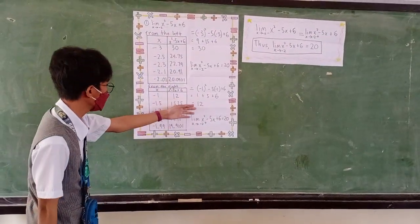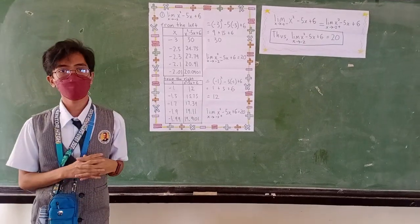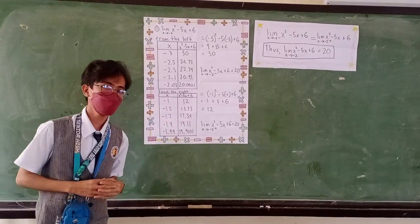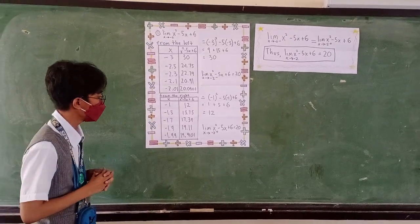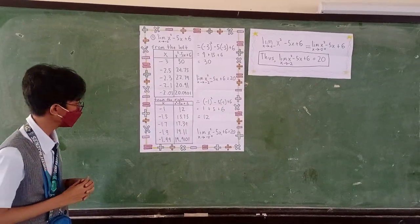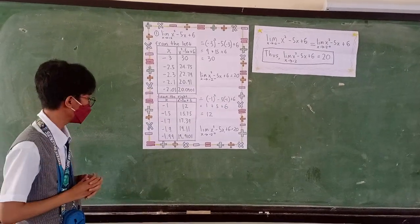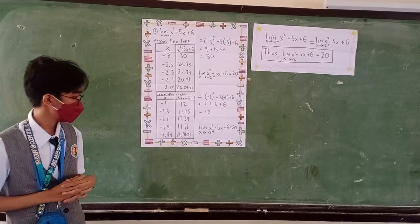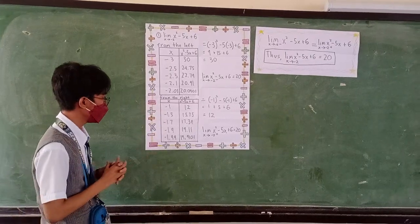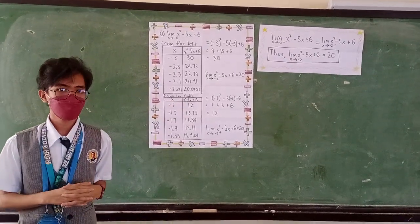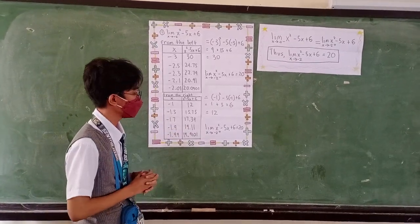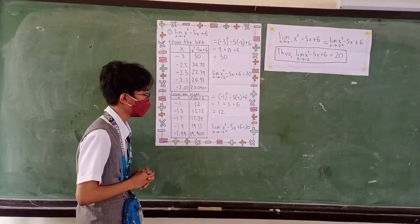We also need to substitute the other values of x. So if x is negative 1.5, the answer would be 15.75. If x is negative 1.7, the answer would be 17.39. If x is negative 1.9, the answer would be 19.11. If x is negative 1.99, the answer would be 19.9101. Same as from the left side, we can see that as x approaches negative 2, the function approaches positive 20. So we can say that the limit of the function x squared minus 5x plus 6 as x approaches negative 2 from the right side is equal to 20.